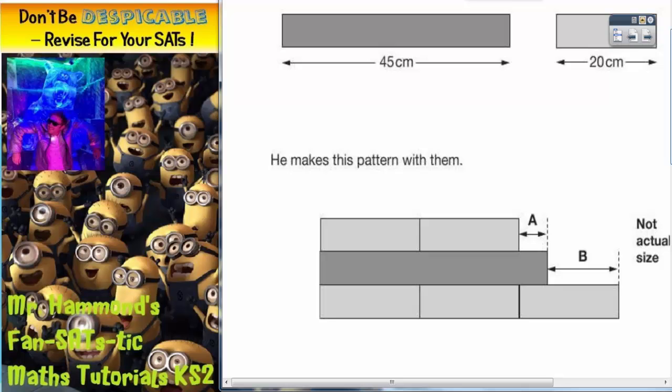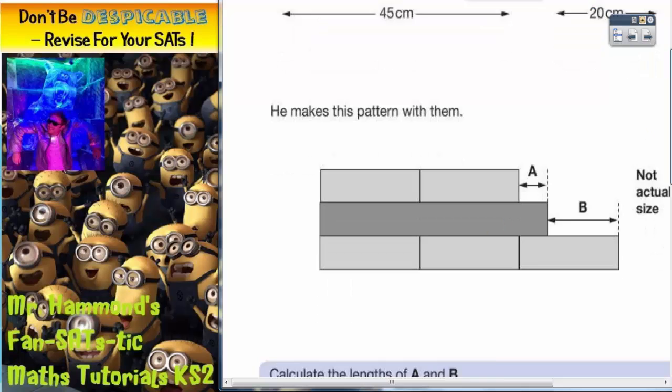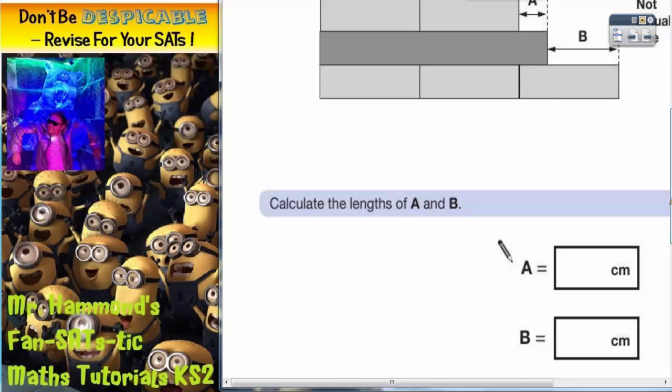Let's see what we've got to do. It says he makes this pattern with them, so he's got two light greys, a dark grey, and then three light greys. Calculate the lengths of A and B.